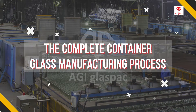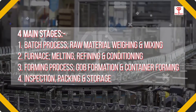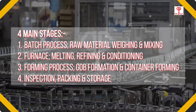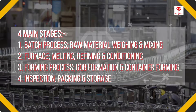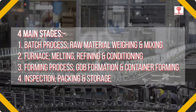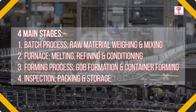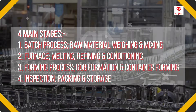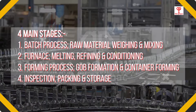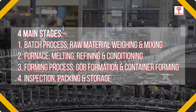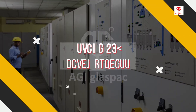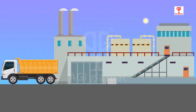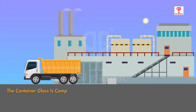The complete container glass manufacturing process has mainly four stages. Stage 1: batch process — raw material weighing and mixing. Stage 2: furnace melting, refining, and conditioning. Stage 3: forming process — gob formation and container forming. Stage 4: inspection, packing, and storage.